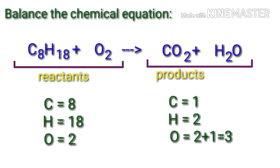If we look at this equation, we can see that the equation is not balanced. In the reactants side, there are 8 carbon atoms, 18 hydrogen atoms, and 2 oxygen atoms. On the products side, there are 1 carbon atom, 2 hydrogen atoms, and 3 oxygen atoms.